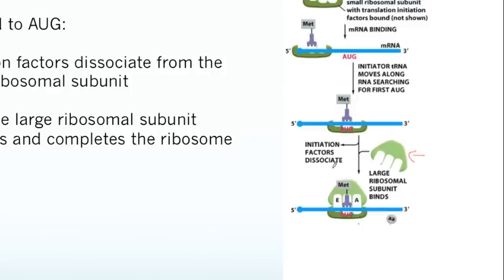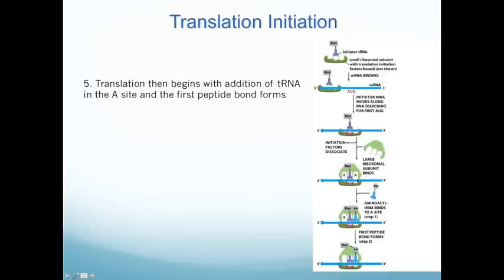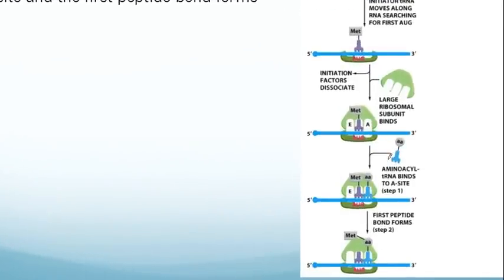The large ribosomal subunit doesn't get added until the initiator tRNA binds to its AUG codon. This completes the ribosome, and now you see why the initiator tRNA was first placed in the P site — because once assembled, there is an empty A site where a new tRNA can add. Step five is the start of translation: your first new tRNA is added to the A site, and the very first peptide bond is formed between methionine and the next amino acid.